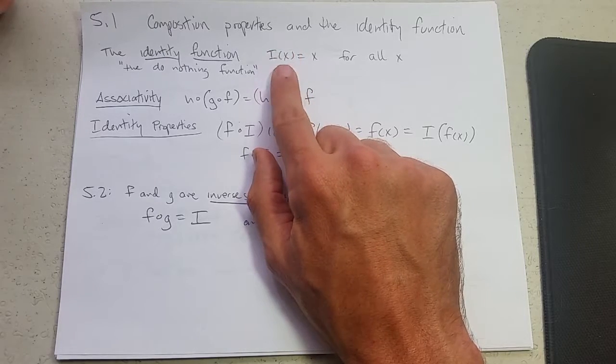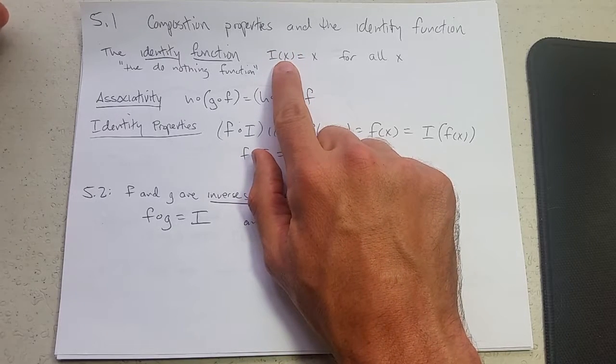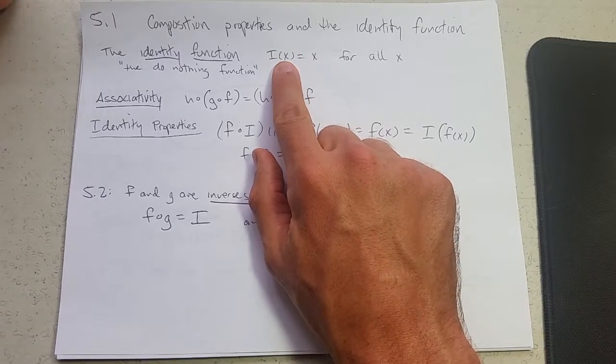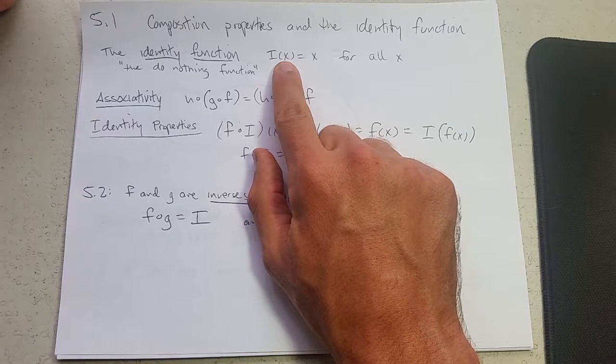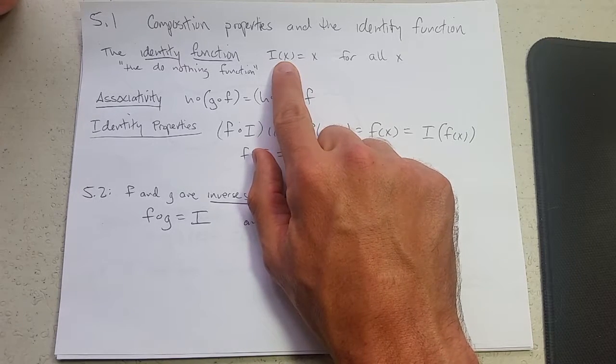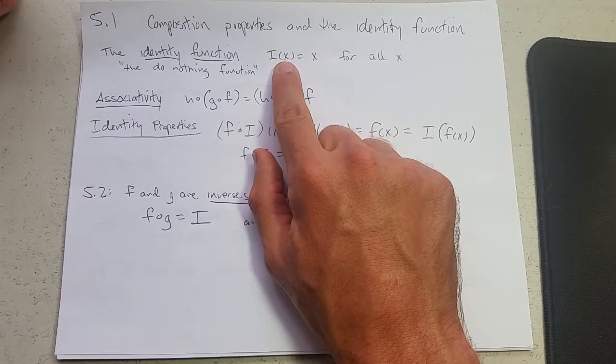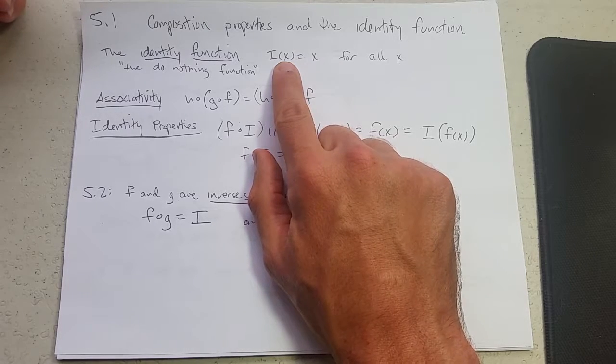This is not to be confused with the function that inputs x and outputs one or inputs x and outputs zero. Those are not the do-nothing functions. They do something. They turn into a one or a zero. Those functions are boring. They're horizontal lines.